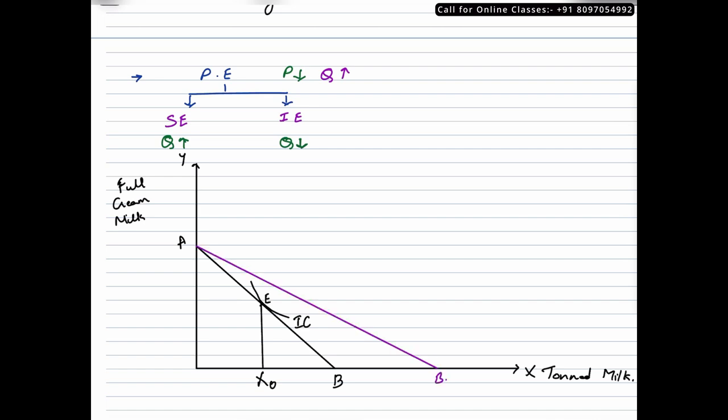Now if the price is falling of toned milk, we should know by now that the budget line would rotate outwards on the x-axis. So this is how it would look like. Let me name it as AB1. Now, we studied in the previous slide that the negative income effect is not large enough to outweigh the substitution effect. That means a consumer would not be willing to buy more of this particular commodity even if the real income of consumer increases. Because a consumer spends a very small proportion of his income on this particular commodity.